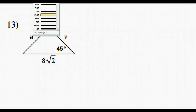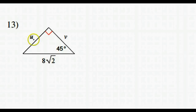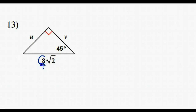Number 13 is a 45-45-90 triangle. The hypotenuse is 8 radical 2. Since the hypotenuse is always leg times radical 2, this 8 must be the leg. So both legs equal 8.